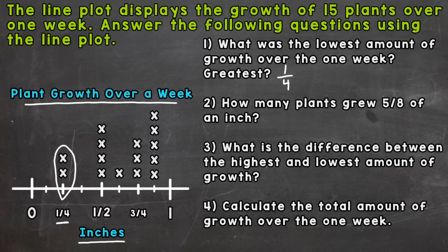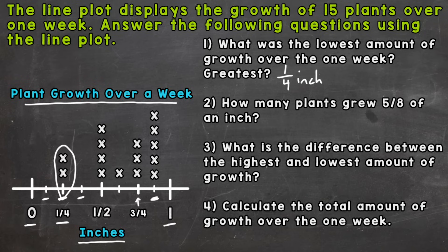A fourth of an inch was the lowest amount of growth over that week. How about the greatest? The greatest is going to be right here. Now that does not have a fraction attached to it, so we're going to have to figure it out. This whole between zero and one whole is split into eighths. So follow along: we have one eighth, two eighths which is equivalent to one fourth, three eighths, four eighths which is equivalent to one half — we always use the simplified versions. Five eighths, six eighths simplified to three fourths, then seven eighths, and eight eighths which is one whole. So the greatest amount grown over a week would be seven eighths of an inch.